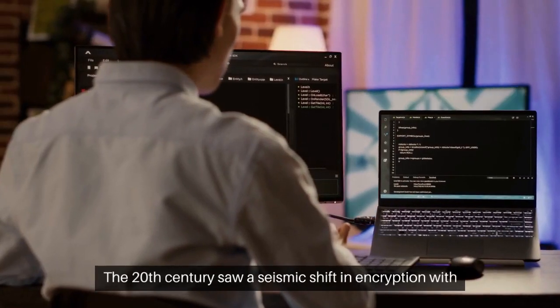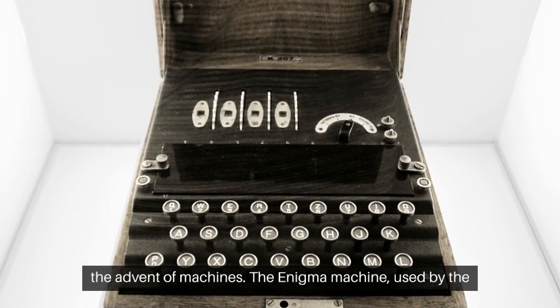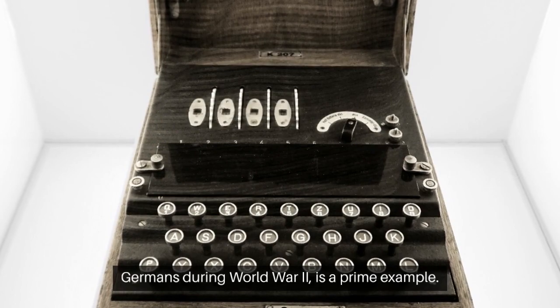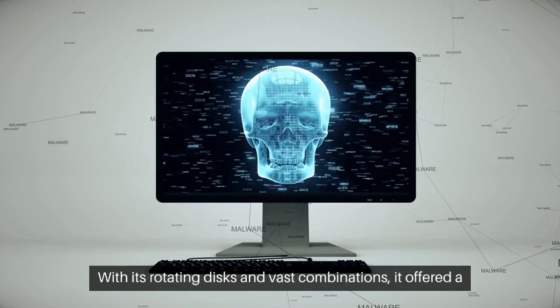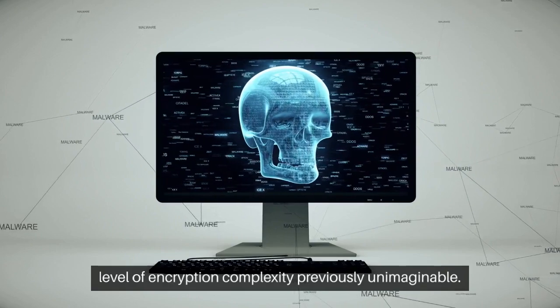The 20th century saw a seismic shift in encryption with the advent of machines. The Enigma machine, used by the Germans during World War II, is a prime example. With its rotating disks and vast combinations, it offered a level of encryption complexity previously unimaginable.